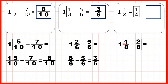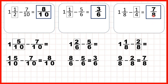But we only have 1 eighth in our mixed number, and we need to subtract 2 eighths. So we can change our mixed number to an improper fraction. 1 times 8 is 8, plus 1 is 9, so we can rewrite our question as 9 eighths minus 2 eighths. The denominator stays the same, 9 minus 2 is 7, so our answer is 7 eighths.